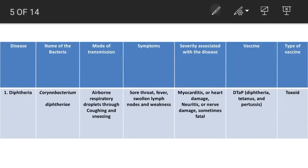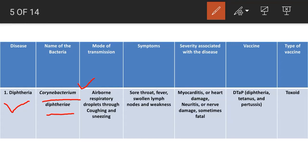The first disease is diphtheria. It is a highly contagious bacterial infection of the nose and throat, caused by strains of Corynebacterium diphtheriae which produce a toxin. This bacteria spreads from person to person through respiratory droplets from coughing or sneezing.